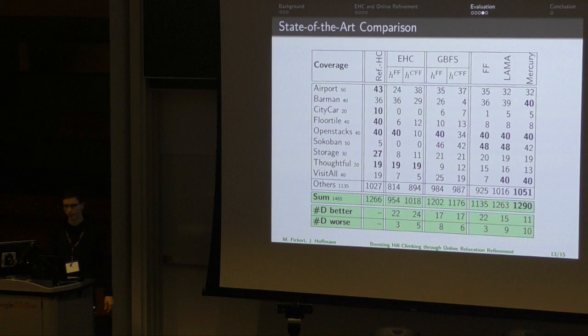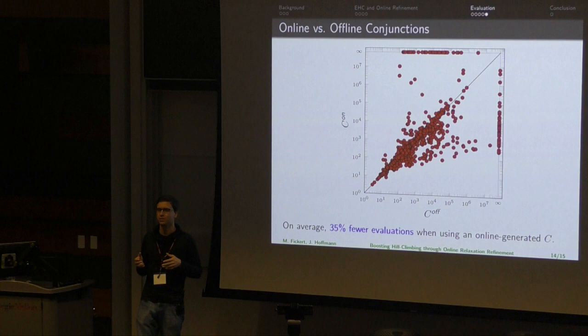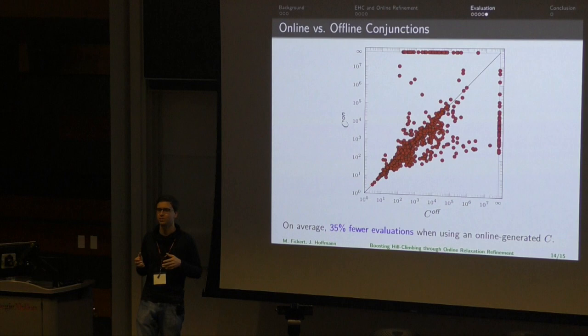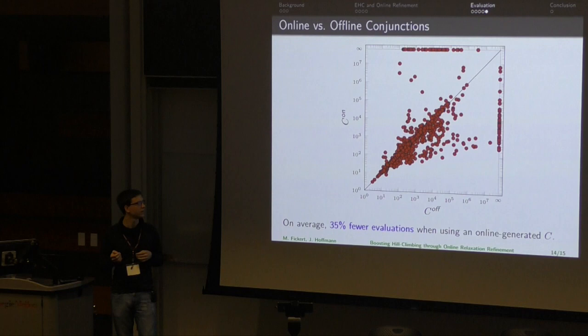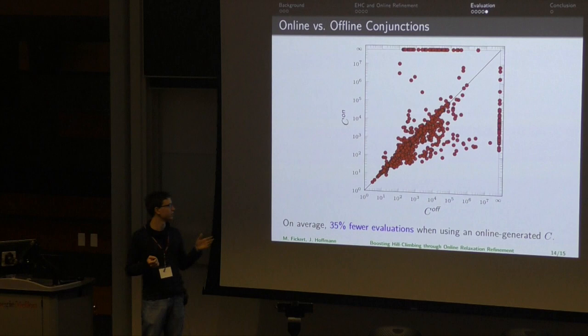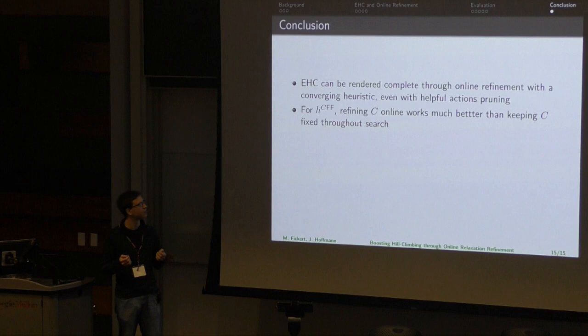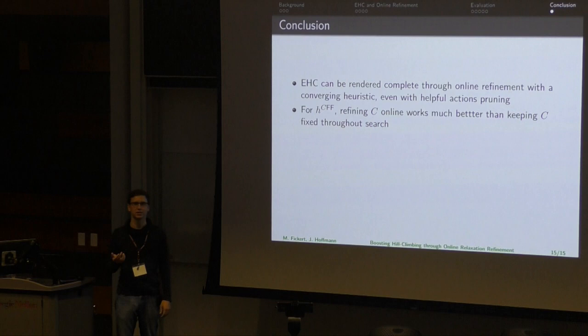We compare running greedy best-first search with the set of conjunctions generated online in the Refinement HC algorithm, versus running greedy best-first search with the same number of conjunctions but all generated in the initial state. There are many variants, but on average we found that online-generated conjunctions perform better — on average 35% fewer evaluations — compared to generating all conjunctions only in the initial state.